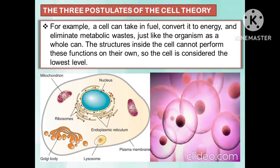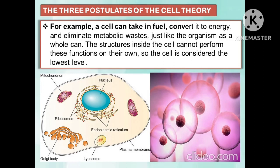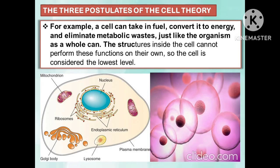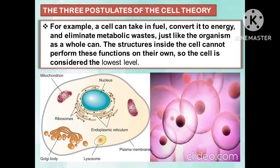For example, a cell can take in fuel, convert it to energy, and eliminate metabolic waste, just like the organism as a whole can. The structures inside the cell cannot perform these functions on their own, so the cell is considered the lowest level.